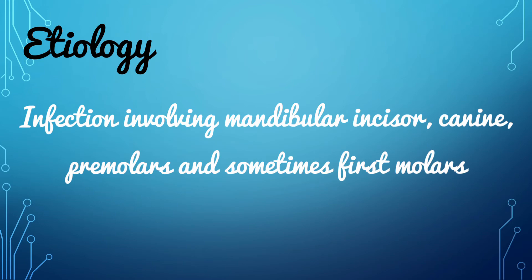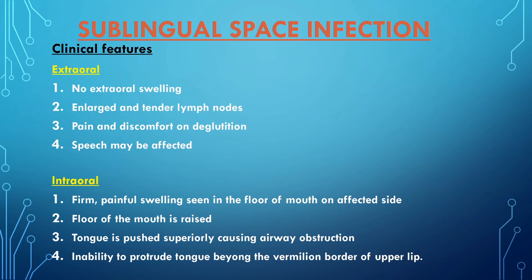The etiology of the sublingual space infection includes infections involving the mandibular incisors, canines, premolars, and sometimes the first molar. The extraoral findings include no visible swelling extraorally, enlarged or tender lymph nodes, pain and discomfort on deglutition, and the speech may be affected.